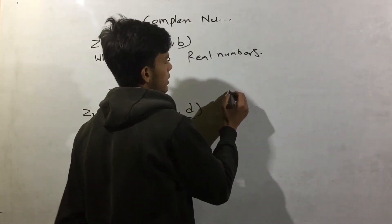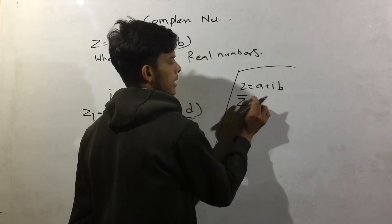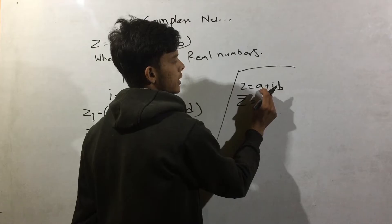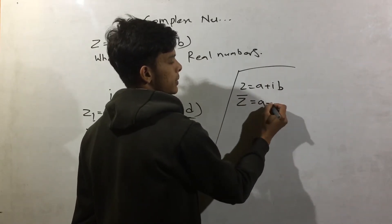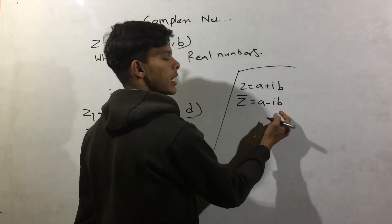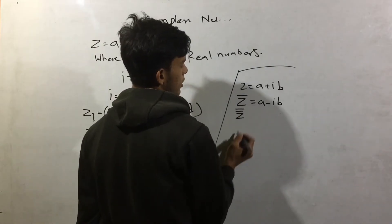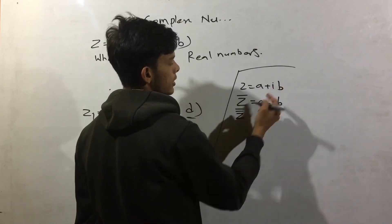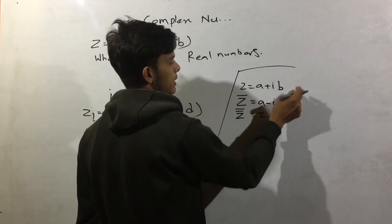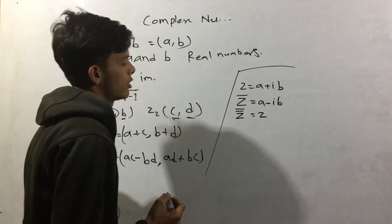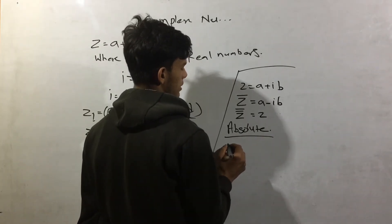Now, conjugate: we can take the conjugate of a complex number. The conjugate of z equals a plus ib will be a minus ib. The double conjugate brings us back to the original. For the absolute value, the absolute value of z is the square root of a squared plus b squared.